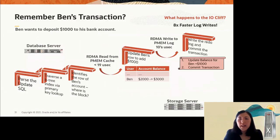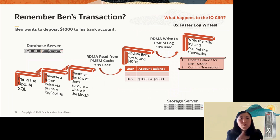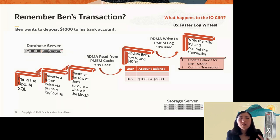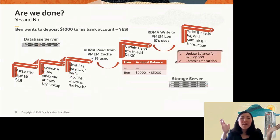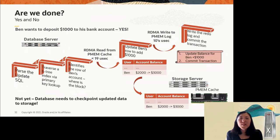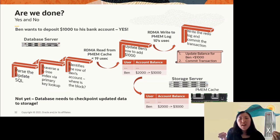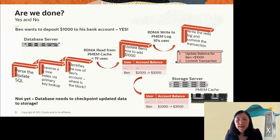Putting it all together: RDMA write trampolines over to the storage server for a super-fast RDMA write to the persistent memory log, enabling much faster log writes. Ben is happy — his money is deposited and his transaction is committed. But the database still has one more challenge: that dirty 8K block in the buffer cache. Eventually it must be written back to storage — at checkpoint time or when it gets cold. So we must write that dirty block back.